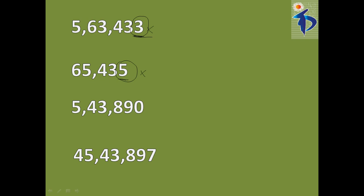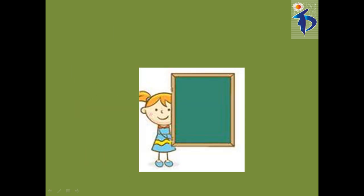The next number is 5,43,890. Here the unit digit is 0, so this number is obviously divisible by 10. The next number is 45,43,897. Here the unit digit is 7, which is not 0, so this is not divisible by 10. Finally, to test whether a number is divisible by 10, we only need to check the units place — the last digit. If it is 0, it is divisible by 10; if not, it is not.